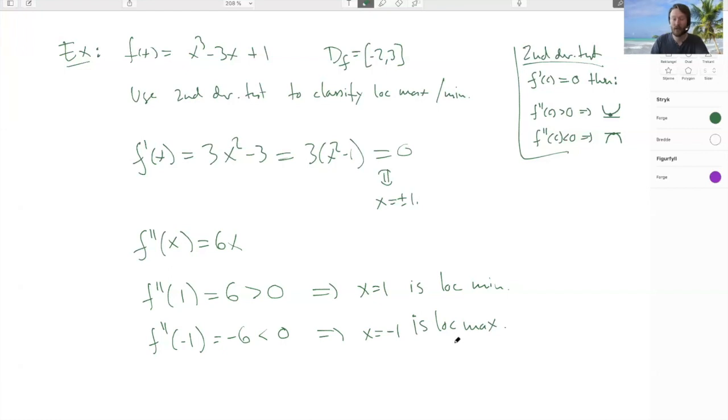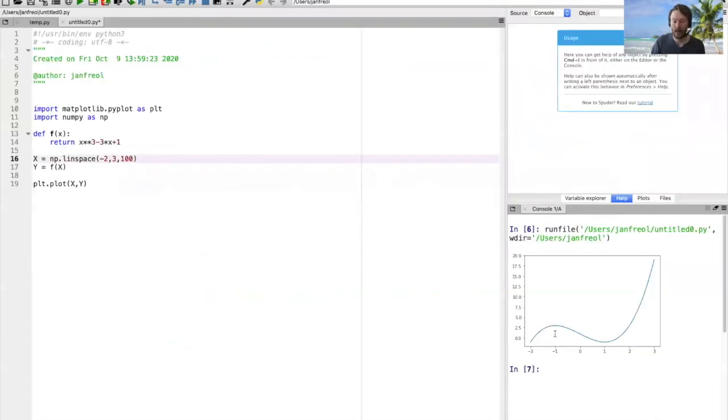And then we can go to a plot of this function. And we can see here that at -1 we have a local maximum and at 1 we have a local minimum. And here we can see that the double derivative appears to be negative, and here the double derivative appears to be positive, exactly matching our intuition.